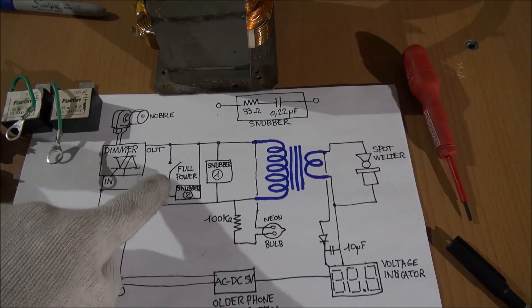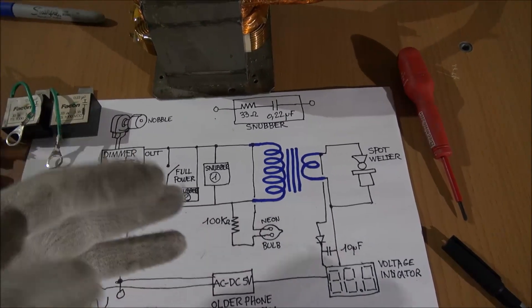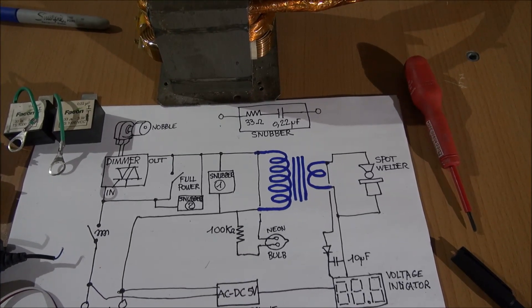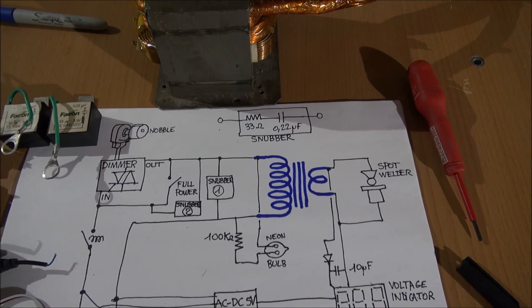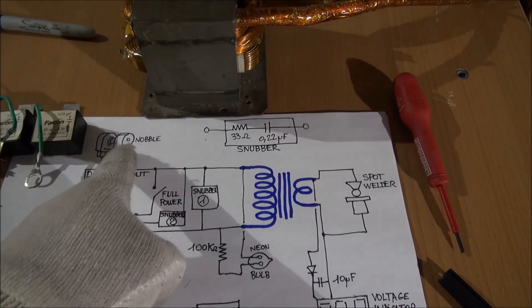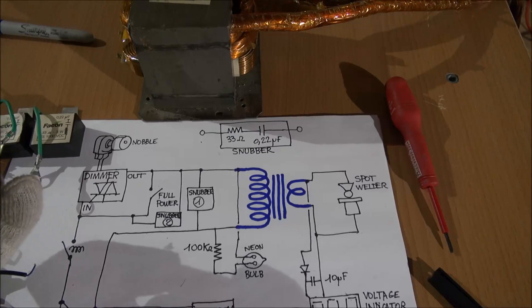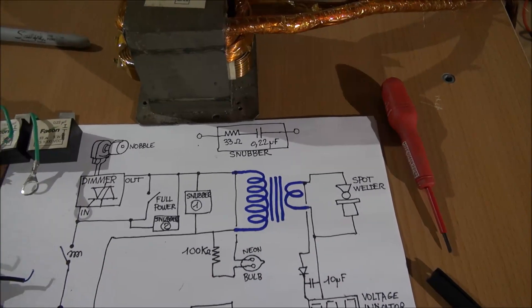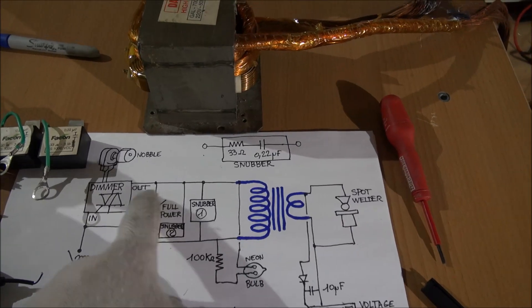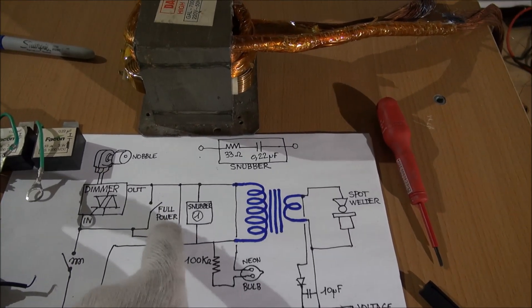Because the dimmer cannot give all the power when you want all the power. The dimmer, when the knob is turned totally to the right, you cannot have the full power. The full power is obtained by the switch on this switch.